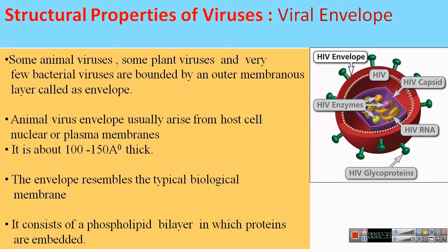This envelope resembles a typical biological membrane — its structure is very similar to the cell membrane or plasma membrane of eukaryotic organisms. It consists of a bilayer of phospholipids in which proteins are embedded. The HIV virus is one example of an enveloped virus, and you can see the outermost thick membrane which is the envelope present in the HIV virus.